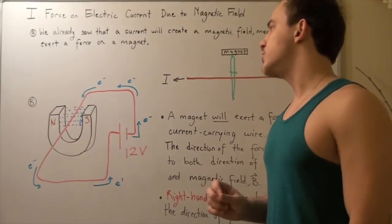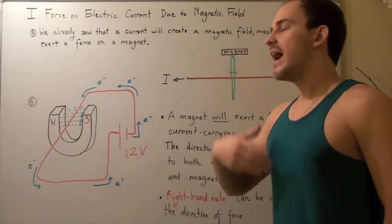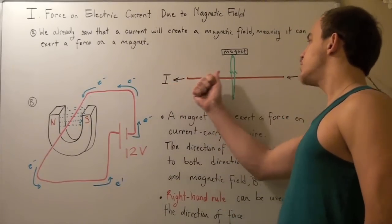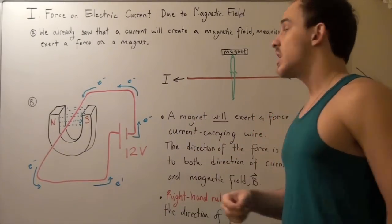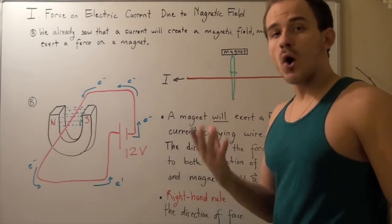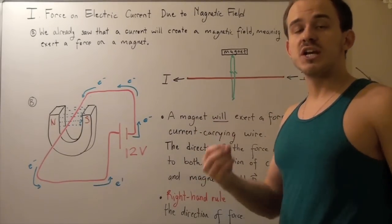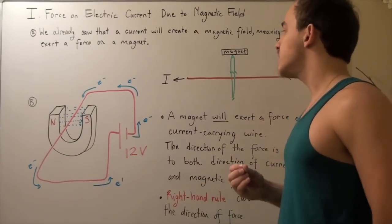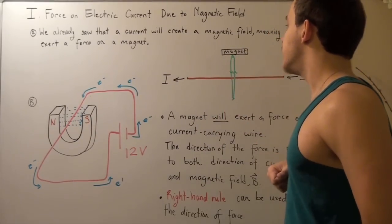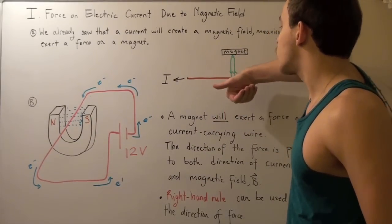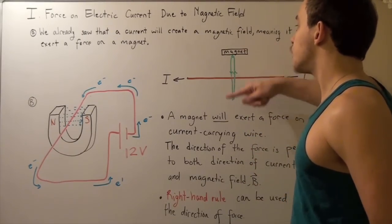Let's look at the following illustration. Suppose we have a long wire, and this wire is allowed to carry electrons traveling in this general direction. By convention, our current will be in the opposite direction. We already saw that the direction of our magnetic field can be found using the right-hand rule: if we take our thumb and point it in the direction of our current, our magnetic field forms concentric circles going around the wire.